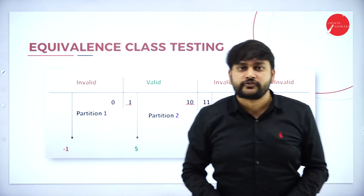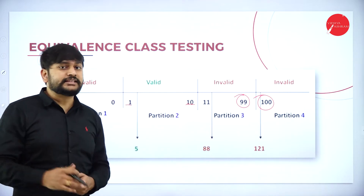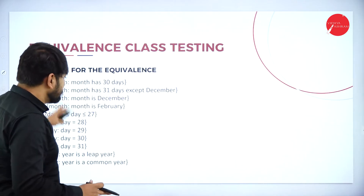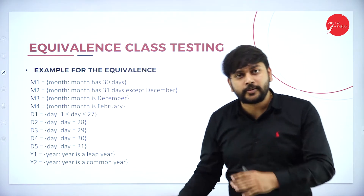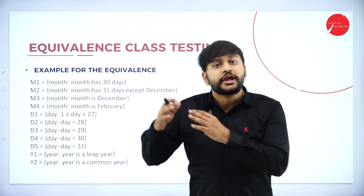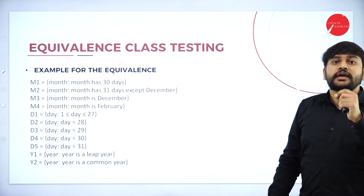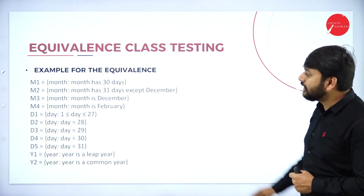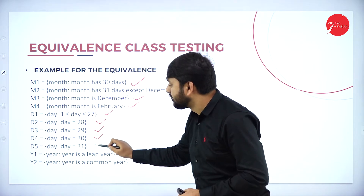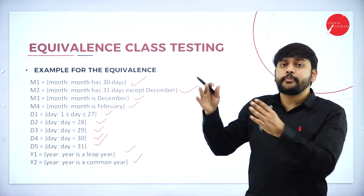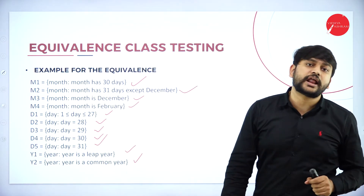Now let's take an example of equivalence class testing with respect to the next date problem. I have considered the next date problem, which we discussed in detail in our previous session. Here, I have partitions m1, m2, m3, m4 through m11 — so I have divided this into 11 partitions.